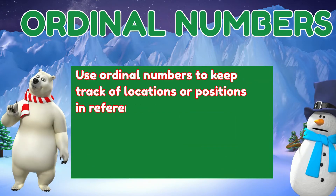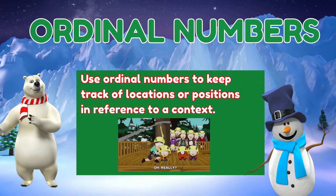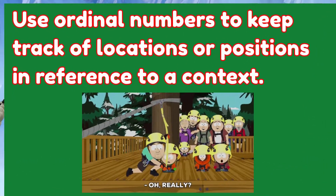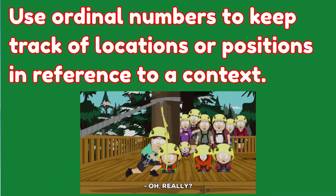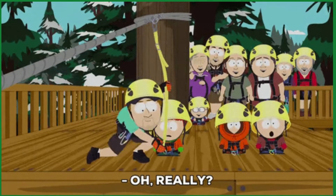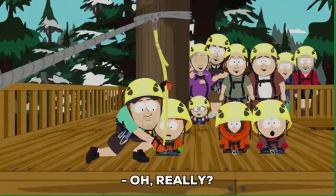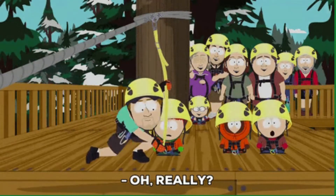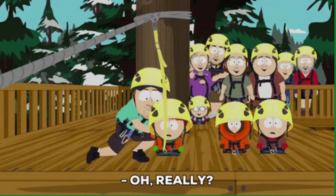Another use of ordinal numbers is to keep track of locations or positions in reference to a context. One example shown here is a line of people waiting for their turn to ride the zip line. The first in line is about to start, and if I may say so, he is very nervous. Well, Anders is the second in line.